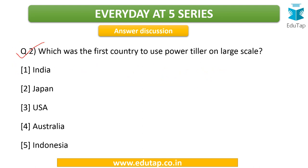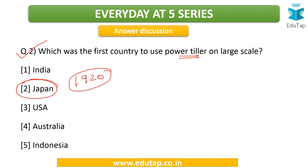Next: which was the first country to use power tiller on a large scale? Japan was the first country that came up with the use of power tillers. The concept of power tiller was first introduced in 1920, and the complete prototype — the full construction and usage of the power tiller for the first time — was done in the year 1947. So the concept came in 1920 and the usage was in 1947.